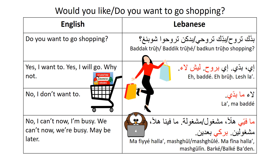To say you're busy: a man says 'ana mashghoul' — I'm busy; a woman says 'ana mashghouli.' For the plural: 'ma fiyna hala' — we cannot right now; 'ma fiyna nrooh' — we cannot go; 'mashghouliin' — we are busy. And 'barki baadein' means maybe later — some people pronounce it 'balkii,' depending on accent.